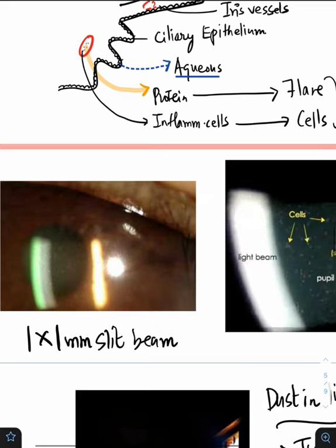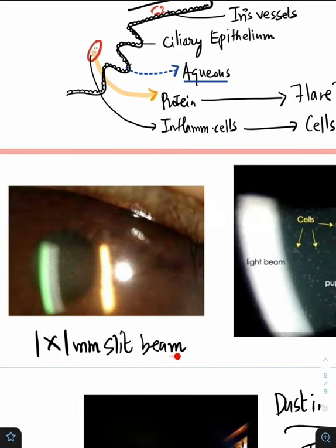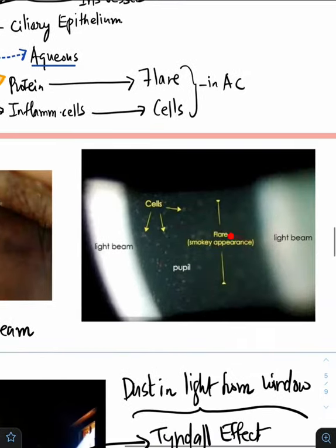These can be appreciated on slit lamp examination by using a 1x1 mm slit beam, where you can appreciate the smoky appearance of the flare and these white dots representing the inflammatory cells.